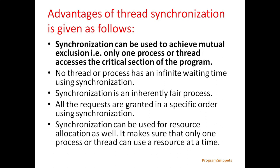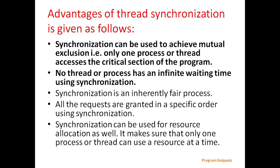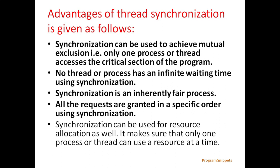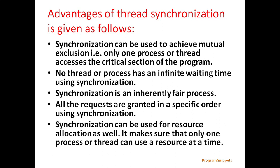Next are the advantages of using thread synchronization. Synchronization can be used to achieve mutual exclusion — that is, only one process or thread accesses the critical section of the program. No thread or process has an infinite waiting time using synchronization. Synchronization is an inherently fair process; all requests are granted in a specific order. Synchronization can also be used for resource allocation, making sure that only one process or thread can use a resource at a time.